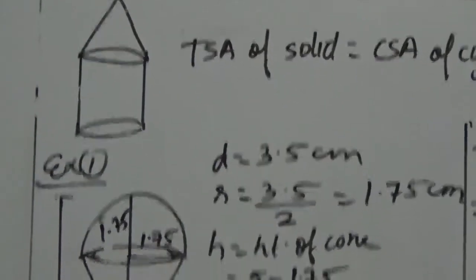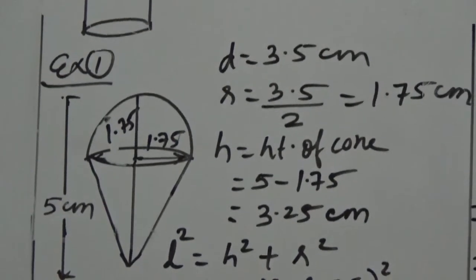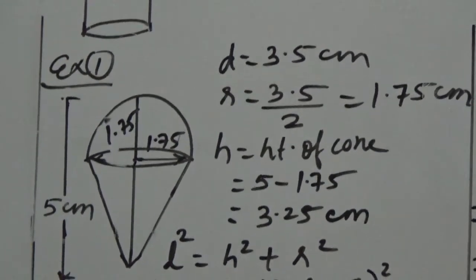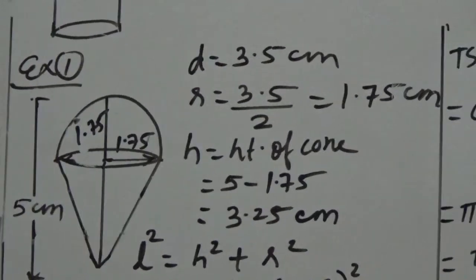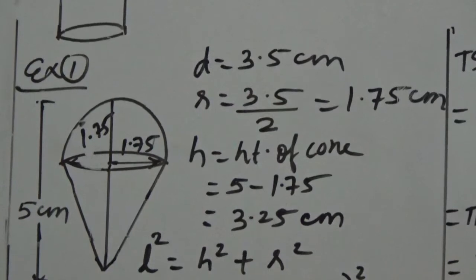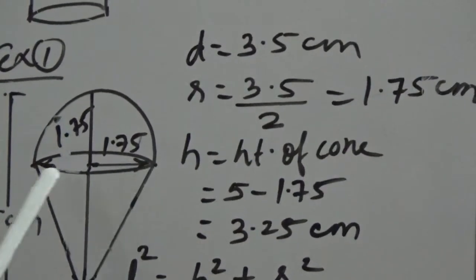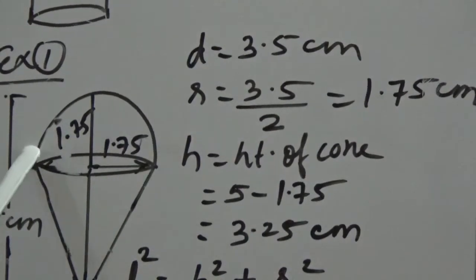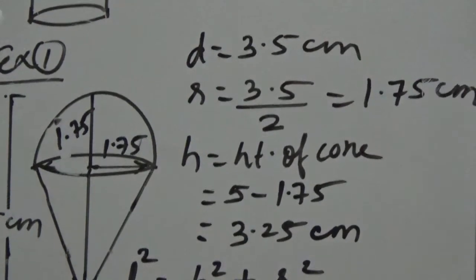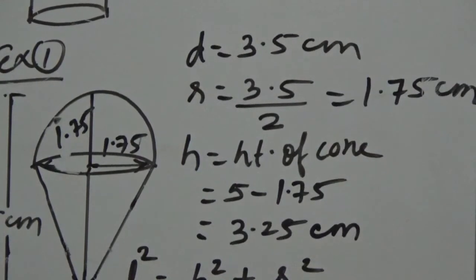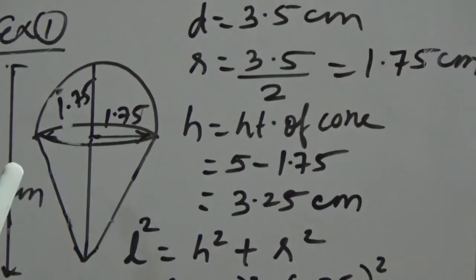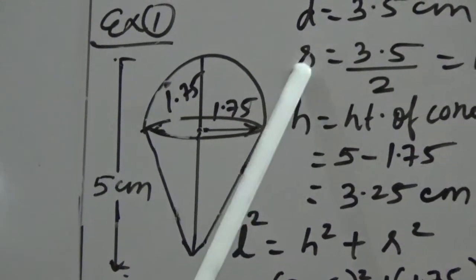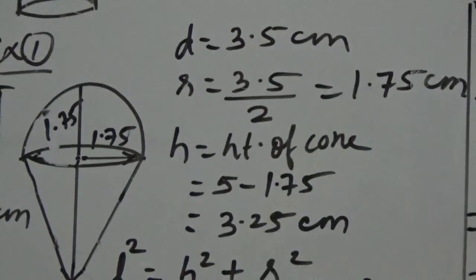Example 1: Rashid got a playing top as his birthday present. He wanted to color it with crayons. The top is shaped like a cone mounted on a hemisphere. The entire top is 5 cm in height and the diameter of the top is 3.5 cm. So the radius is 3.5 ÷ 2 = 1.75 cm. Since the hemisphere's height equals its radius, the height of the cone is 5 − 1.75 = 3.25 cm.